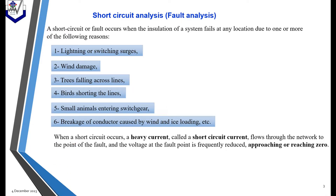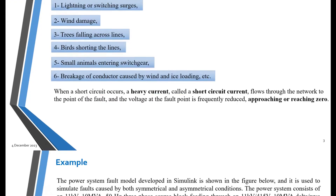When a short circuit occurs, a heavy current — called the short circuit current — flows through the network to the point of the fault, and the voltage at the fault point frequently reduces, approaching or rushing to zero.